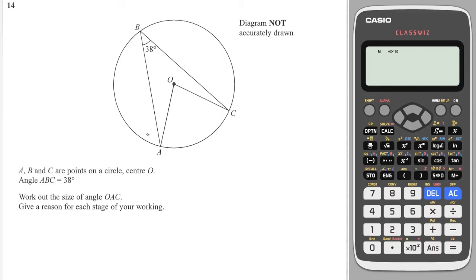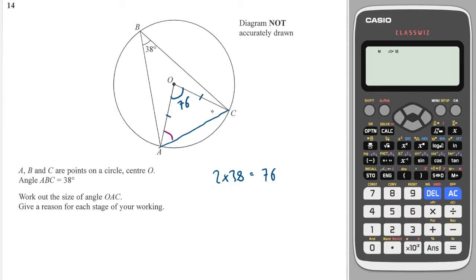Here we have a classic arrowhead and we're asked to work out angle OAC. I'm going to draw a line connecting A and C, use the angle at center theorem, and work out that angle is 2 × 38° = 76°. Because these two sides are radii, that makes it an isosceles triangle, so those two base angles are equal.